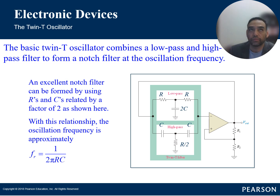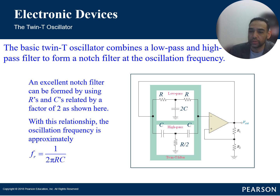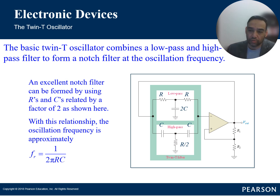By selecting the values of these components, the oscillator frequency can be set to any desired value within the specs of the operational amplifier. The twin-T network produces a phase shift of 180 degrees at the oscillation frequency. This phase shift combined with the phase shift introduced by the amplifier results in a total of 360 degrees, satisfying the condition for sustained oscillation — that positive feedback.